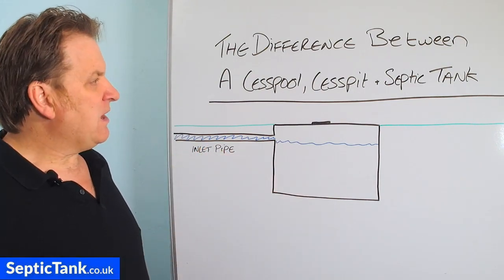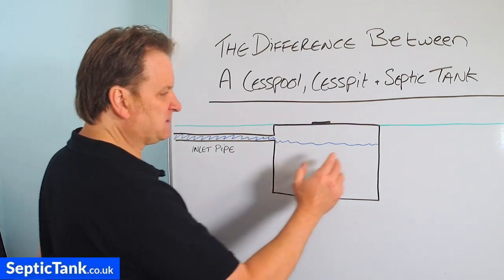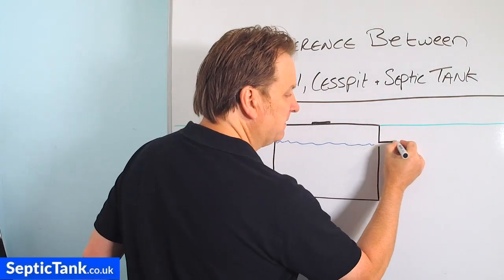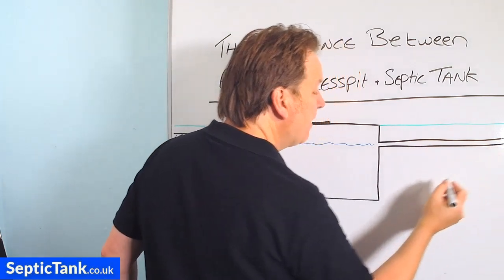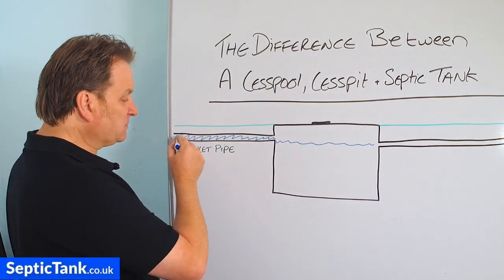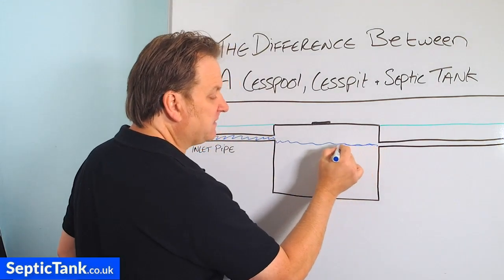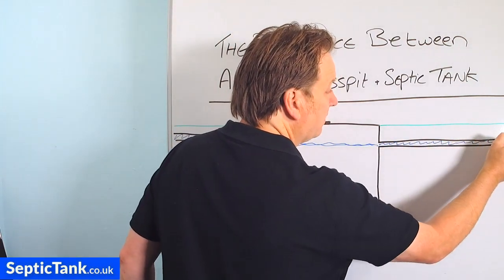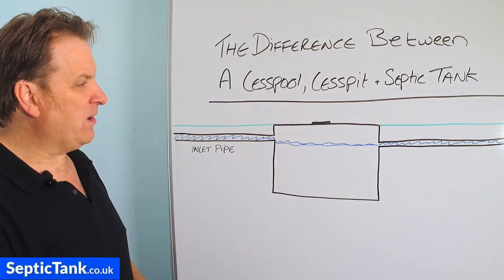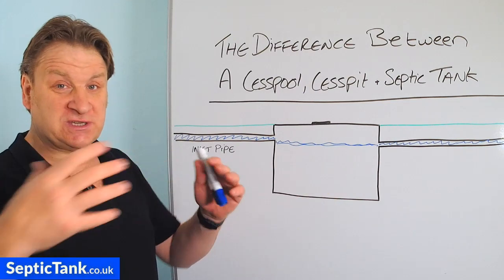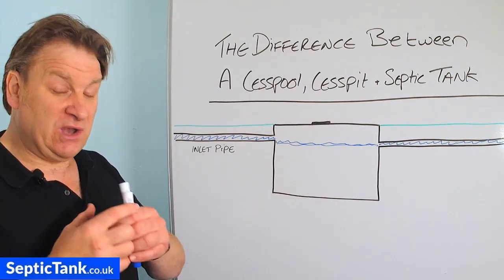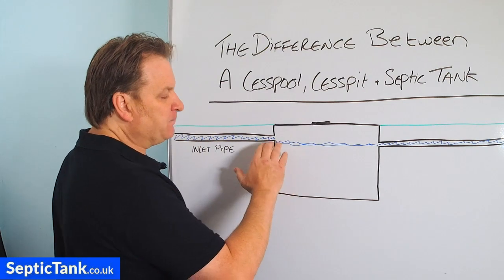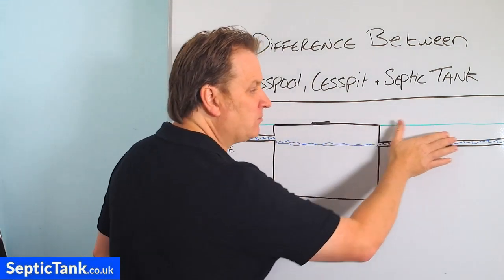Anyway, that's a cesspool. Now a cesspit is exactly like a cesspool, but the only difference is that it's got an outlet pipe. All the wastewater will still come in, fill up to the level of the outlet pipe, and then it will drain away into a soakaway. In the soakaway it will just soak away. The soakaway could be a pit, a herringbone system, or soakaway crates. The point is: liquid comes in, it fills up to the level of the outlet pipe, and then the water will just drain away.